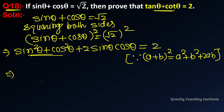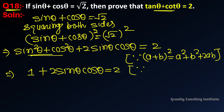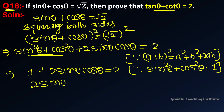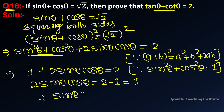We know that sin²θ + cos²θ = 1. Therefore, 2 sin θ cos θ = 2 − 1 = 1, which means sin θ · cos θ = 1/2.